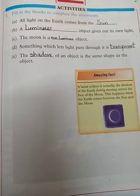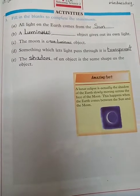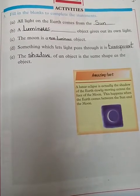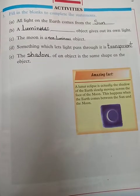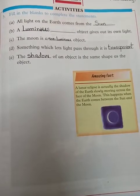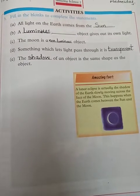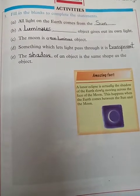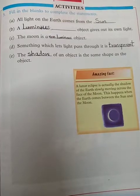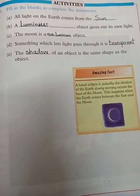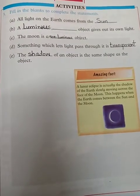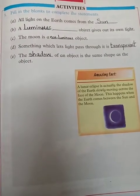Next, 'A ___ object gives out its own light.' Which objects have their own light? Luminous objects. A luminous object gives out its own light. Write 'luminous' here.